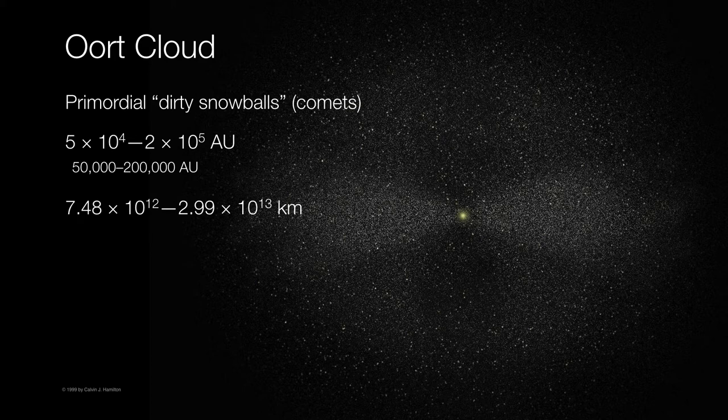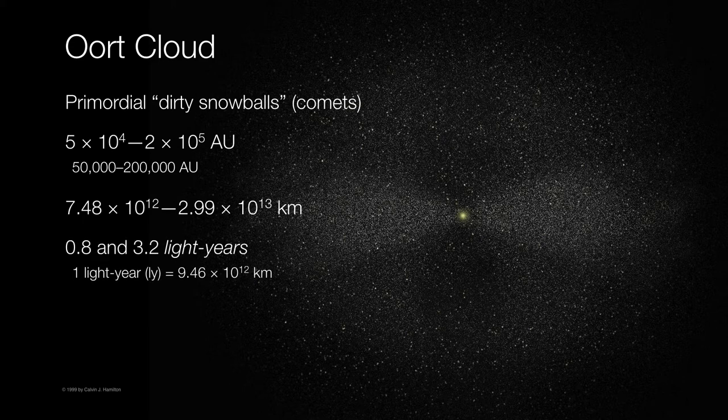As a matter of fact, we can start to even think about the amount of time it would take a beam of light to travel from the Sun out to one of these comets. It turns out that it takes light the better part of a year, maybe even a little over three years, to reach the outer edge of the Oort cloud.